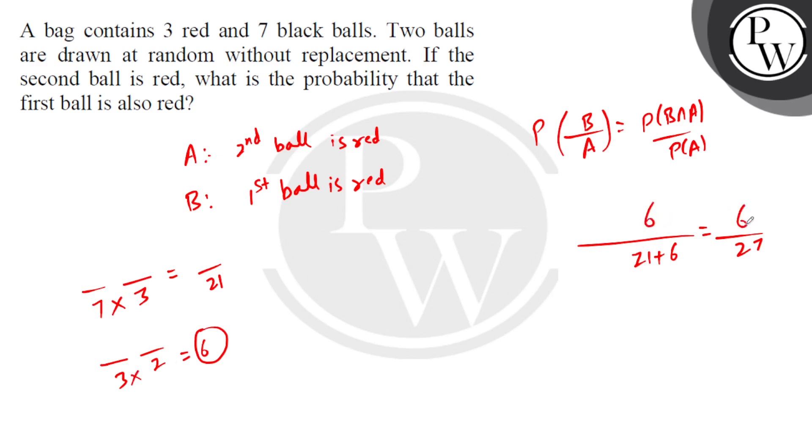6 by 27 is the required probability. What we calculate further, that comes out to 2 by 9. So, our final answer is 2 by 9. I hope you understood well. Best of luck. Thank you.